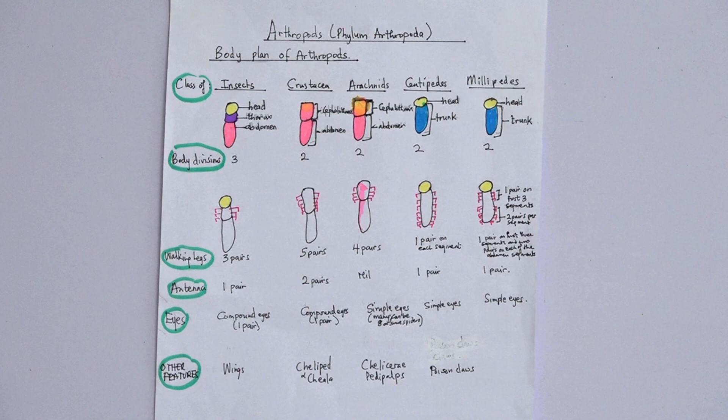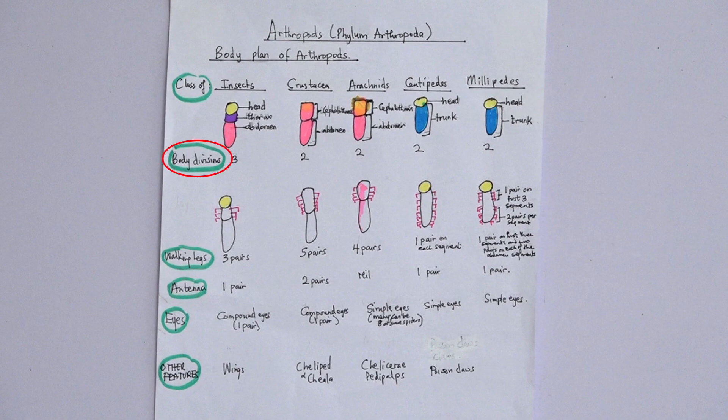Now let's look at the characteristics of each class of arthropods and use them to separate the groups. We have insects, crustacea, arachnids, centipedes, and millipedes — with centipedes and millipedes being the myriapods. Starting with body divisions: insects have three body divisions — head, thorax, and abdomen.